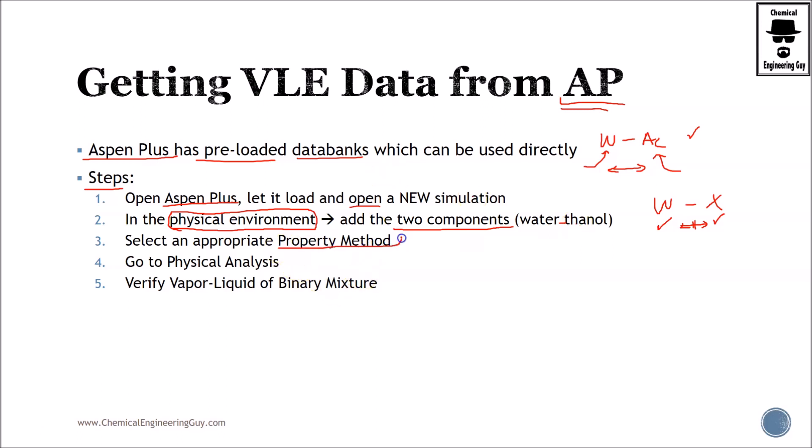Now, be sure to select the correct property method. If you're using polar with polar, if you're using water, if you're using a hydrocarbon system, whatever case you're using, ensure to use the correct property method. Of course, if you want to get the best liquid interaction, ensure to select an activity-based property method, such as non-random two liquid model, NRTL, UNIFAC, MARGULES, and so on.